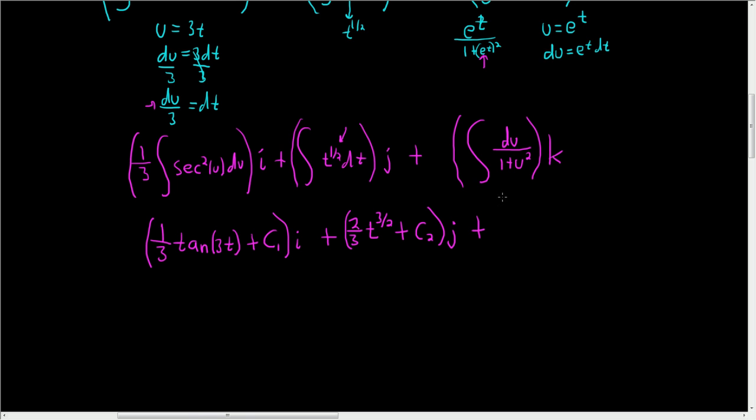And this is going to be arc tan of u, but u was e to the t. So this is arc tan of e to the t plus c sub 3. And here we have the k.